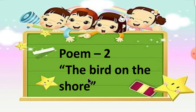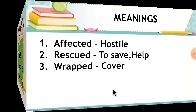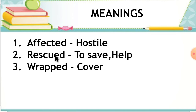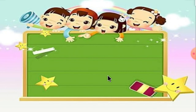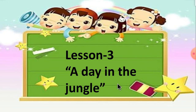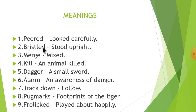Poem 2 — The Bird on the Shore: Affected means 'hostile'; Rescued means 'to save or help'; Wrapped means 'covered'. Lesson 3 — A Day in the Jungle: Peered means 'looked carefully'; Bristled means 'stood upright'; Merge means 'mixed'; Kill means 'an animal killed'; Dagger means 'a small sword'; Alarm means 'an awareness of danger'; Track down means 'follow'; Pug marks means 'footprints of the tiger'; Frolicked means 'played about happily'.